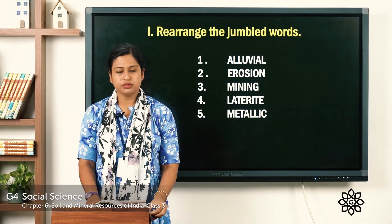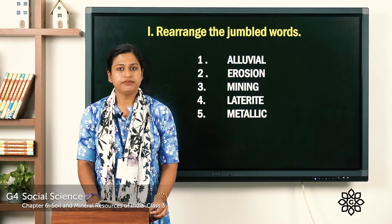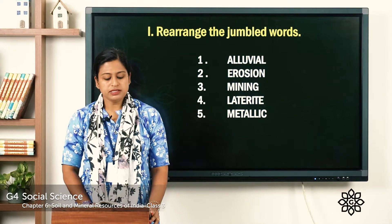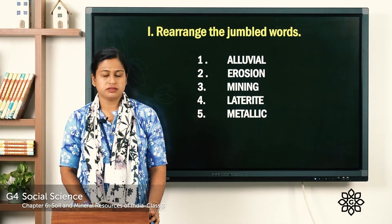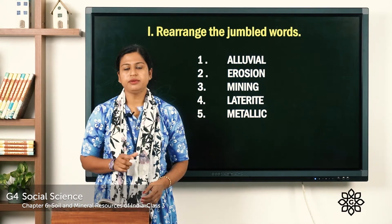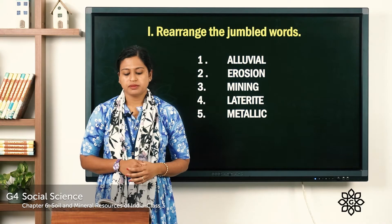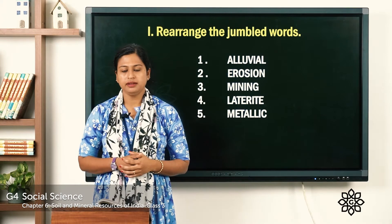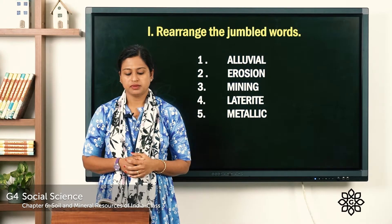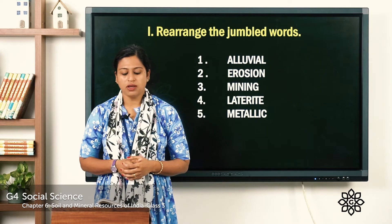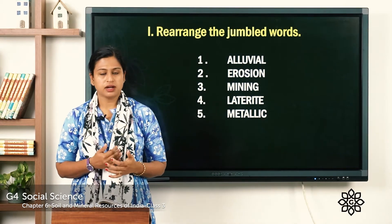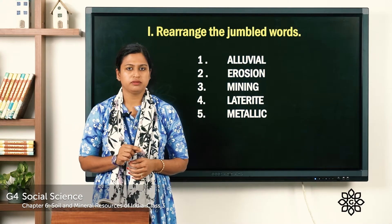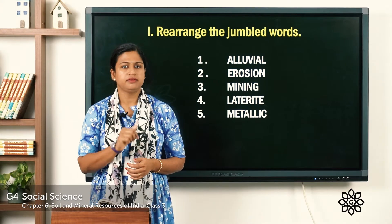Now let's move to the second exercise: rectify the following sentences. The first sentence is — humus is the top layer of the earth's surface — one word you have to replace. The second one is — laterite soil is dark grey or black in colour. The third one is — mountain soil is mainly found in areas of Karnataka, Kerala and Tamil Nadu. Here one word you have to underline and then replace it.